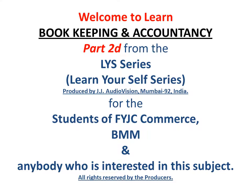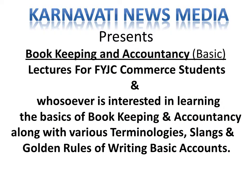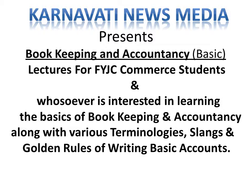Transaction number 2: Cash and furniture — both are assets, both are real accounts. As there is a purchase of asset, this is a cash transaction. Sold goods worth Rs.1,000 to Sohan. Therefore this is a credit transaction. First effect will go to the personal account, that is Sohan's account, and second effect will go to the goods account.